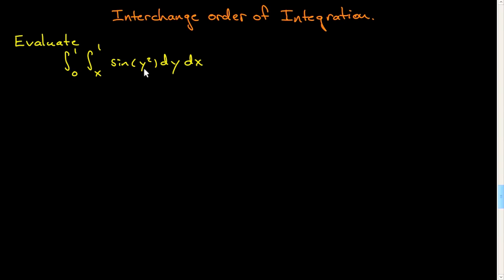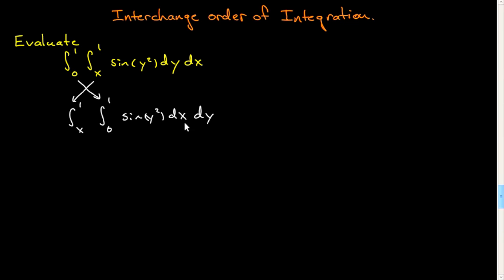So you think, well, I'll just do the integrals in a different order. Rather than start with the y integral, I'll do the x integral first. That would seem to be a better approach. So you think, okay, I'll just interchange these. We saw before with rectangles that we could just change the order of integration, so I'll put x from 0 to 1, 0 to 1, sine y squared, dx dy. But that takes care of my problem with the integrand — this makes no sense.